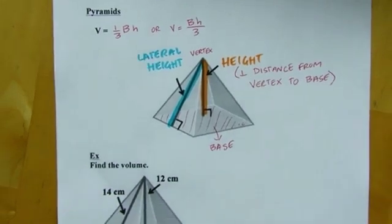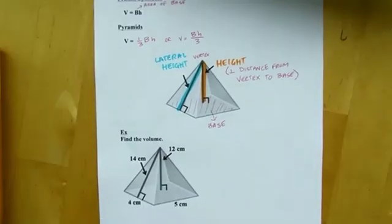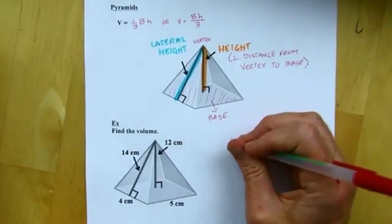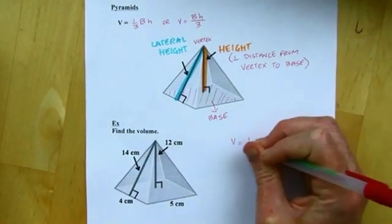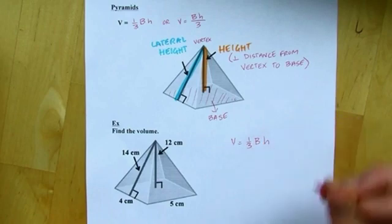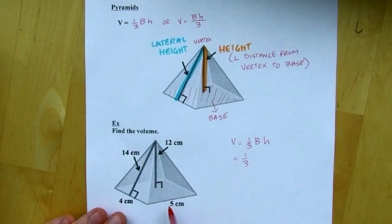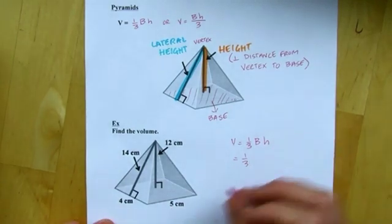Okay, all right. So, let's find the volume of this pyramid. So, I'm going to use my formula, one-third area of the base times the height. The area of the base is pretty simple here because it's just a rectangle, a four-by-five rectangle.